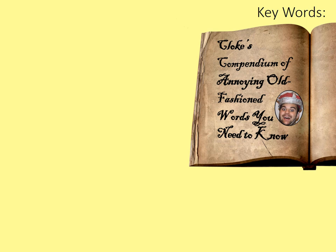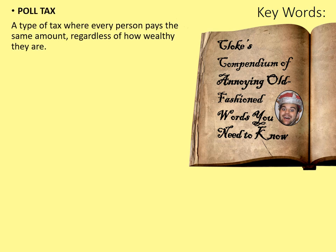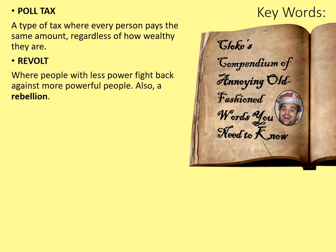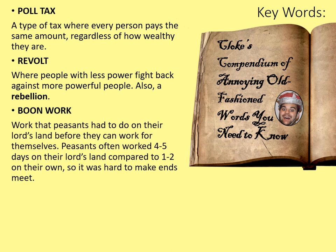We're going to have a look at some key words. In today's compendium of old-fashioned words you need to know are: poll tax — a type of tax where every person pays the same amount regardless of how wealthy they are; revolt — where people with less power fight back against more powerful people, also called a rebellion; and boon work — work that peasants had to do on their lord's land before they could work for themselves. Peasants often worked four to five days on their lord's land, especially at harvest time, compared to one to two days on their own, so it was hard to make ends meet.